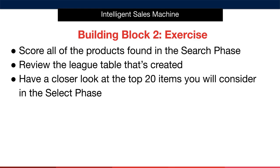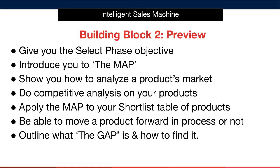Before we move into the next module, I want to give you a preview of what's coming next. I'm going to give you the select phase objective and introduce you to the map. I'll show you how to analyze a product's market and do competitive analysis, apply the map to your shortlist table of products so we're able to move a product forward in the process or not. Then I will outline what the gap is and how to find it.